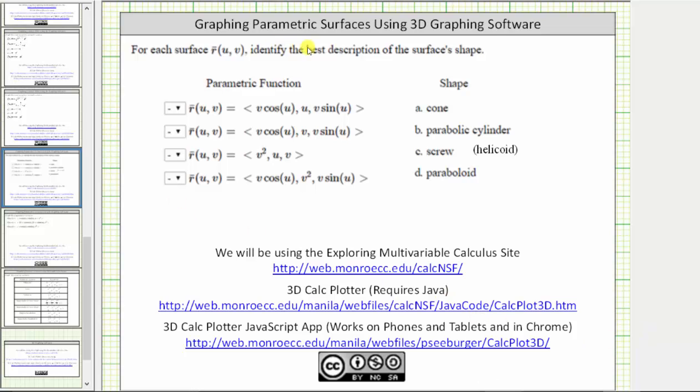In this video, we will use three-dimensional graphing software to graph parametric surfaces. The directions state for each surface given by the vector function r of u comma v, identify the best description of the shape or the name of the surface.